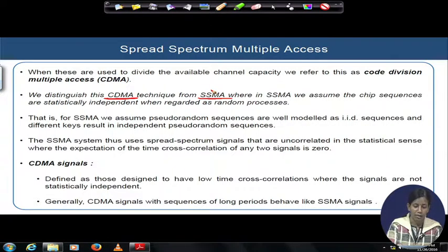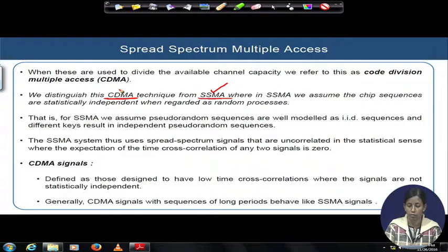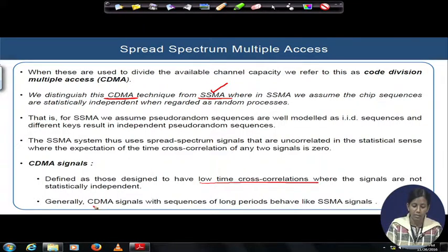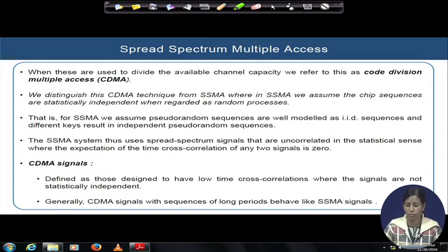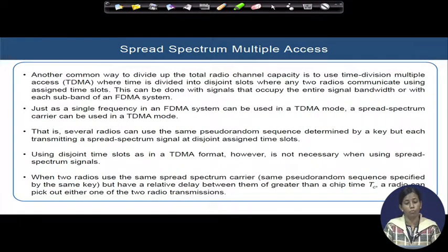SSMA is the ideal situation and CDMA is closer to the practical situation. The CDMA signals utilized here have low time cross-correlation values. If CDMA signals have very long periods, they will asymptotically come close to SSMA signals, because in those cases the low cross-correlation values will be so low they can be approximated as almost zero — which is the case of SSMA. So we have learned about FDMA, then SSMA and CDMA.